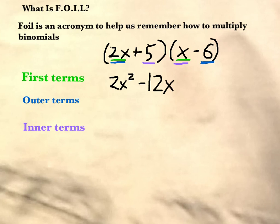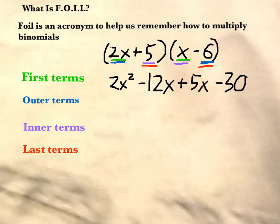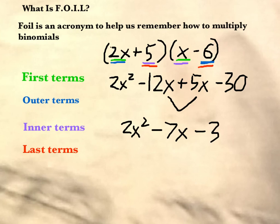I stands for the inner terms, so when I multiply them I get... L stands for last, so I need to multiply together my two last terms in my binomials. 5 times negative 6 is minus 30, and I've finished my FOILing. I just need to combine my two like terms in the middle and rewrite it as 2x squared minus 7x minus 30.